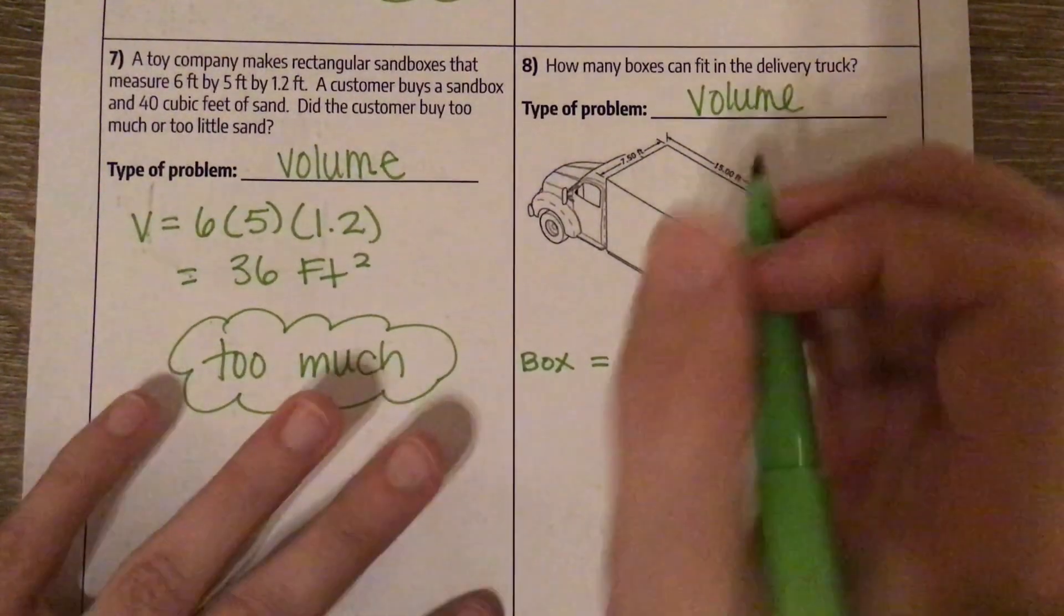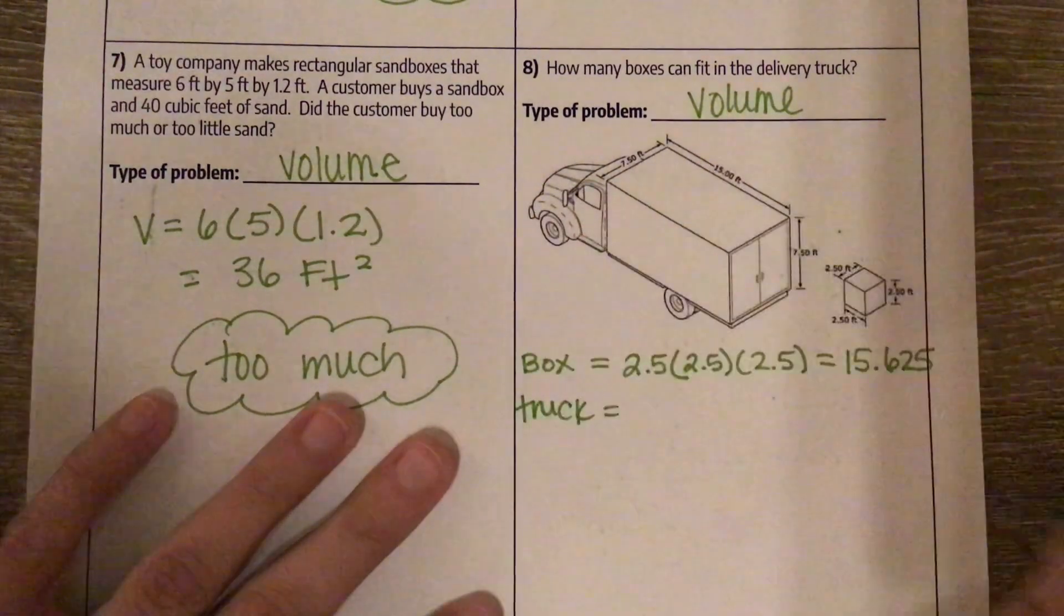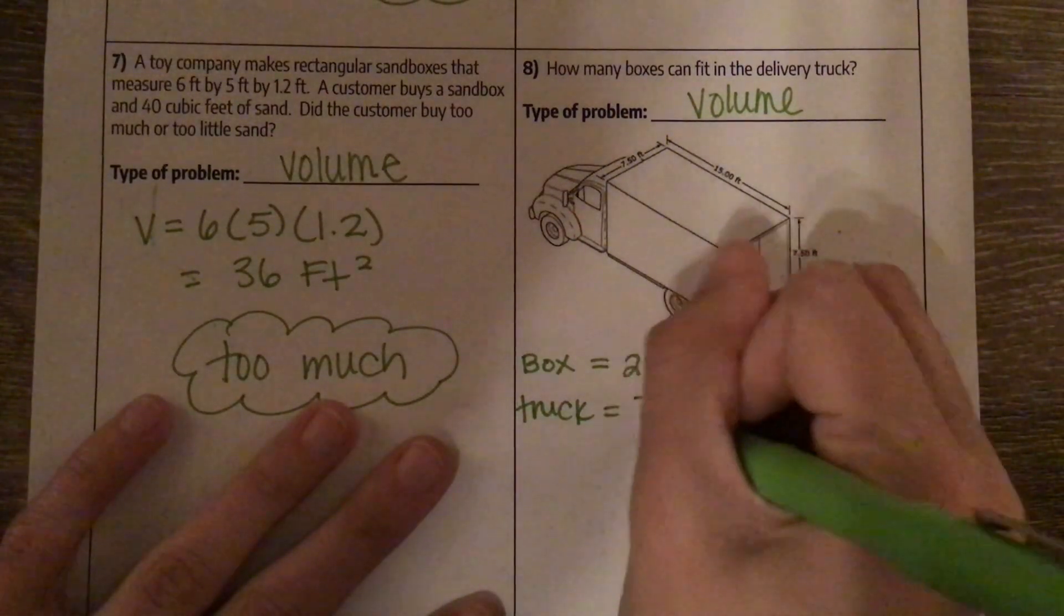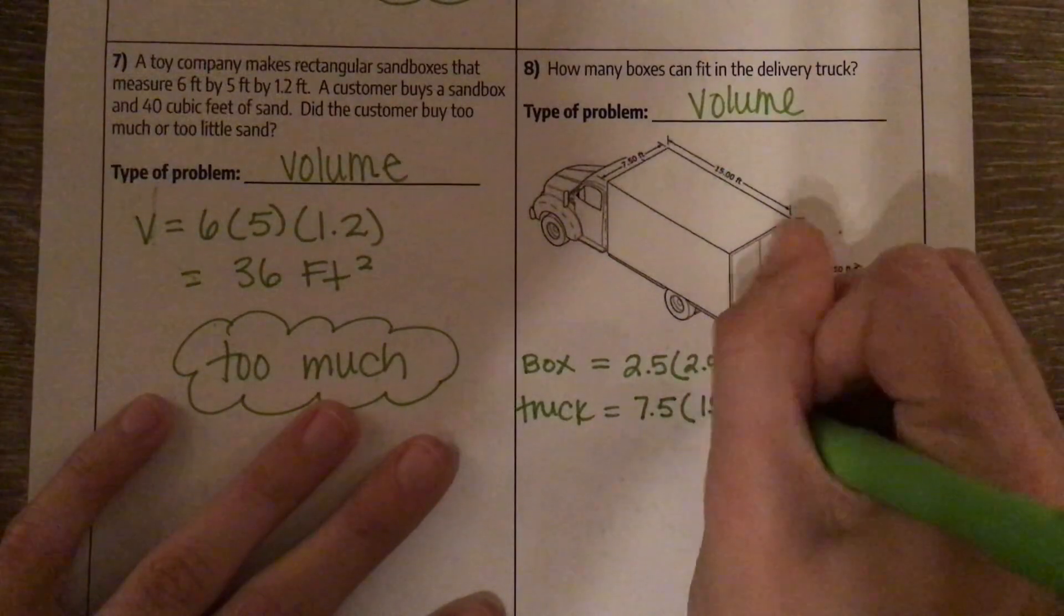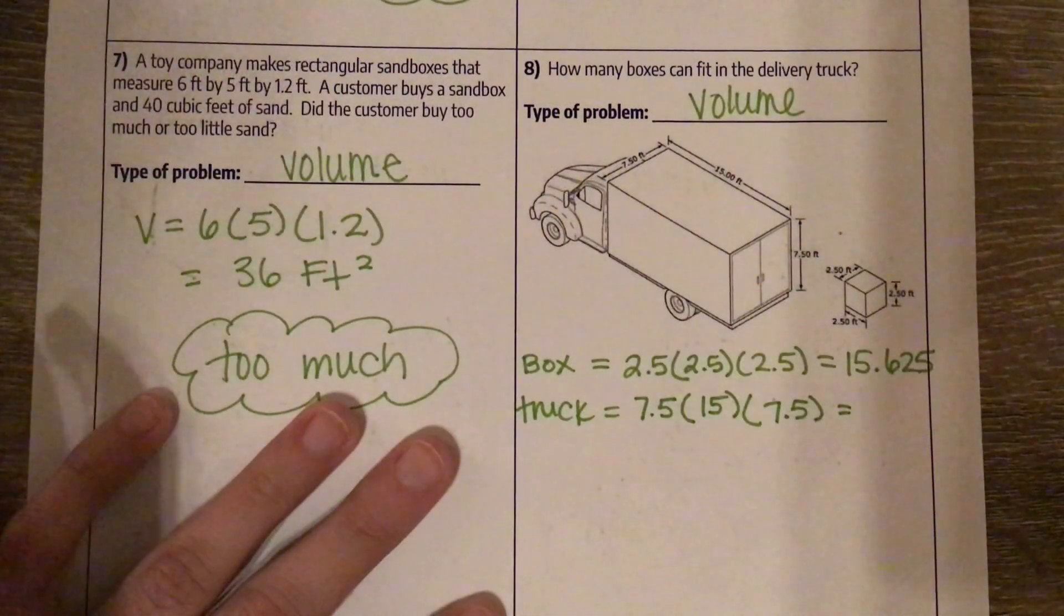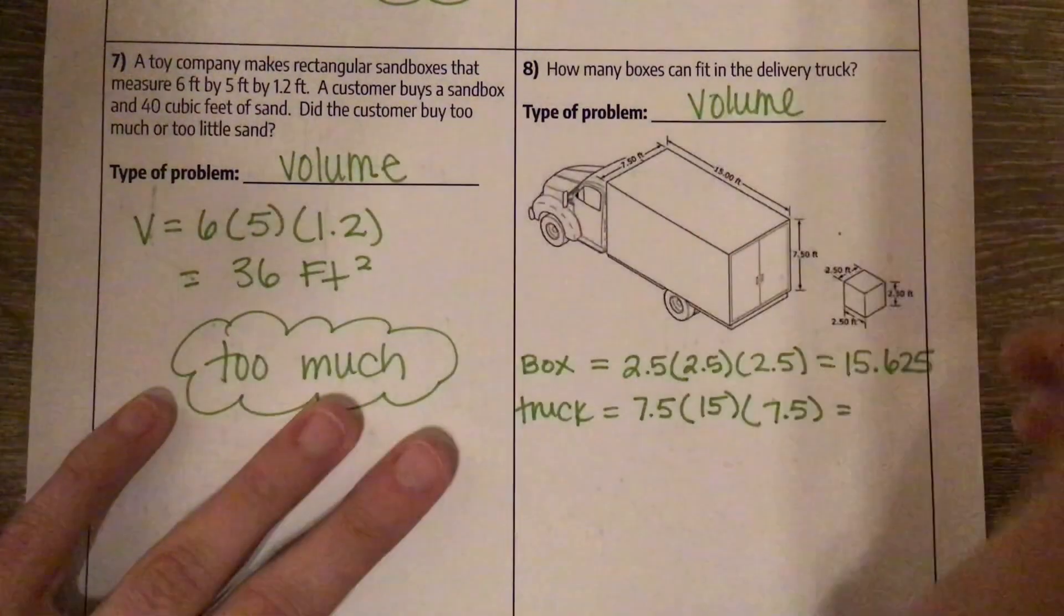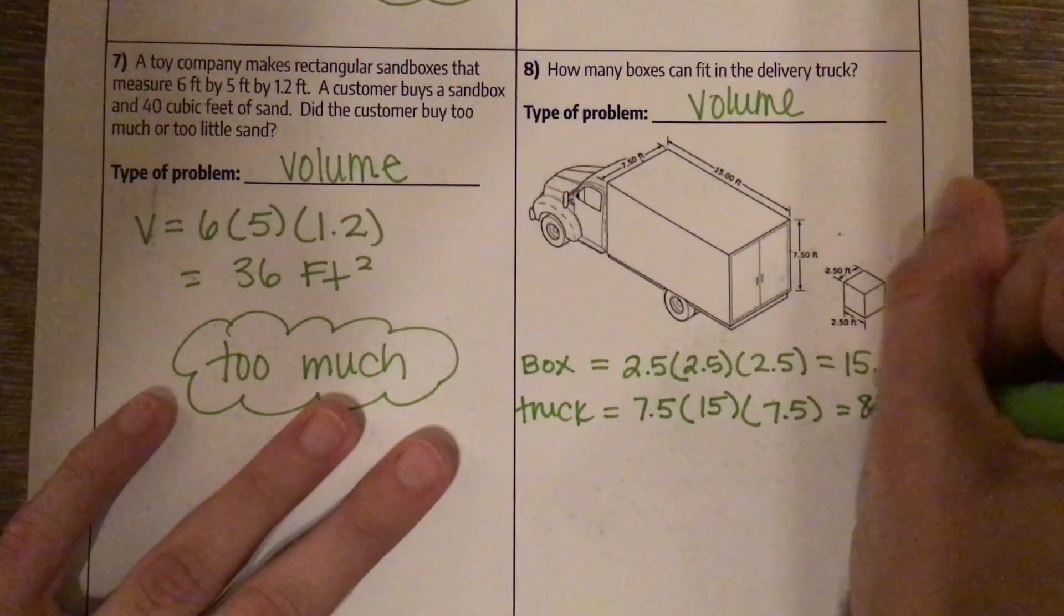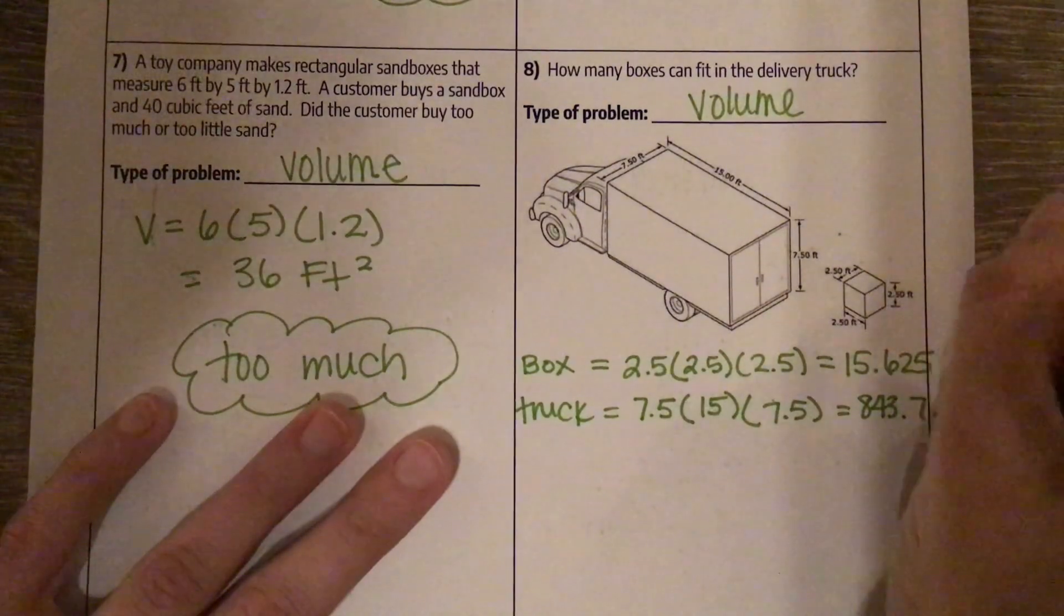Then, I need to find the truck's volume, which is, again, kind of hard to see. 7.5 times 15 times 7.5, which is 843.75.